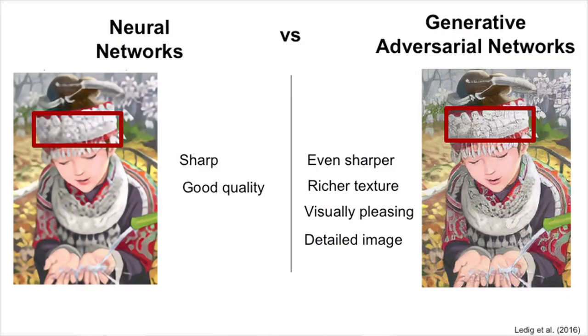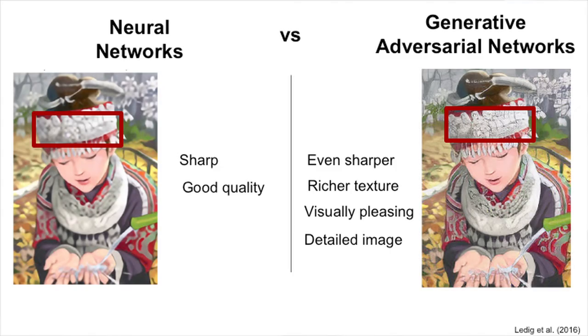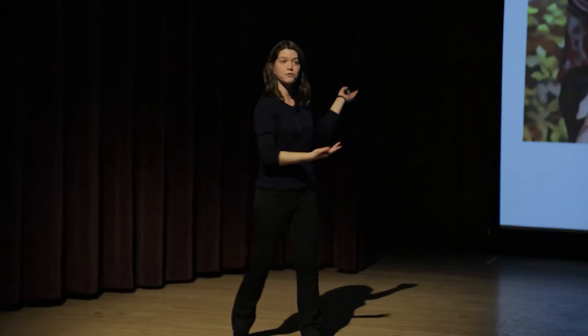Here we compare two results. The one on the left is obtained with the basic neural network without the expert network feedback communication. The second image is obtained with generative adversarial networks, with this whole communication in place. If you pay particular attention to the region in red, you can see how much better the texture is. Also, if you look at the flowers in the background, you can actually see the flowers — compared to the basic neural network method, where the flowers are smoothed out.